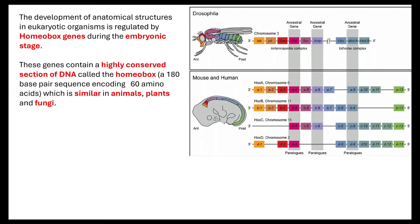We know this because scientists have looked at drosophila. Drosophila are very small organisms with a very short life cycle. What they started to realise is that when they looked at drosophila, they noticed that they sometimes had mutations occur which resulted in the limbs — for example, a leg growing out of their head where the antennae should be. So the more they investigated, the more they understood that these genes actually contain a highly conserved section of DNA, which is called the homeobox.